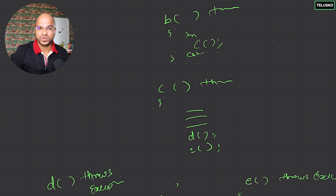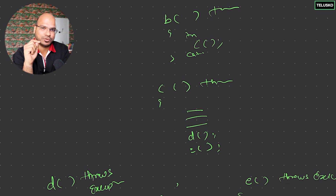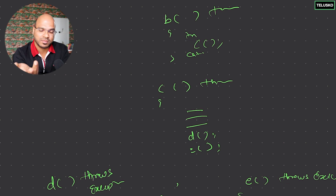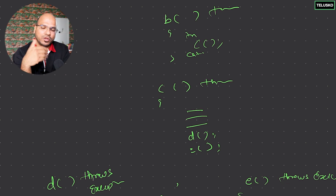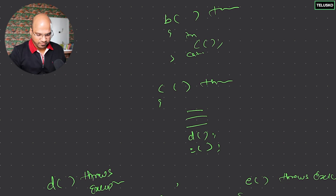That is called ducking the exception for a particular method, and it is done with the help of the `throws` keyword. This makes sense especially for checked exceptions. For unchecked exceptions it's not compulsory to handle them, but for checked exceptions — like `IOException`, which happens when doing file input/output or database connectivity with SQL — you are required to handle them.